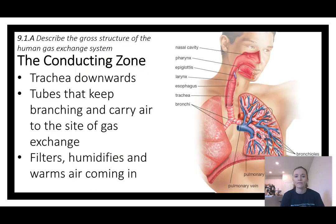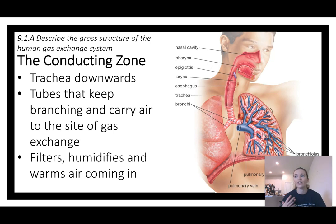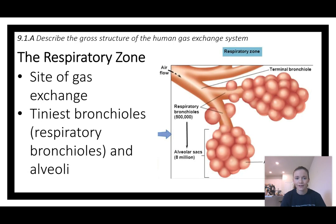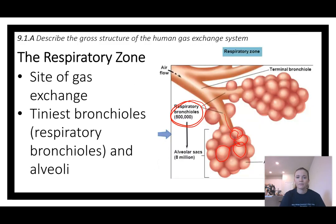The conducting zone refers to everything conducting air to the respiratory zone — the alveoli. So from the trachea down, the branching tubes filter, humidify, and warm the incoming air. If you've ever been up north in winter when the air is really dry and cold, it hurts to breathe — warm, humid air is the best air to breathe. The respiratory zone is where gas exchange actually happens, in the respiratory bronchioles and alveoli.